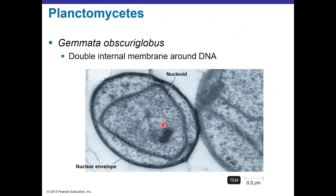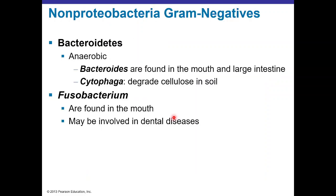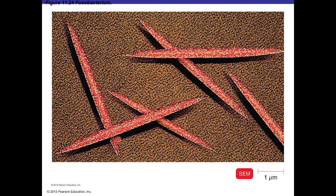Gemmata obscuriglobus is an unusual bacterium because, unlike most bacteria, it has a double internal nuclear membrane surrounding its DNA. Bacteroidetes are anaerobic bacteria — Bacteroides lives in the mouth and large intestine, Cytophaga lives in the environment degrading cellulose in soil. Fusobacterium is an anaerobic bacterium found in the mouth involved in dental diseases, with a distinctive spindle shape visible in electron micrographs.